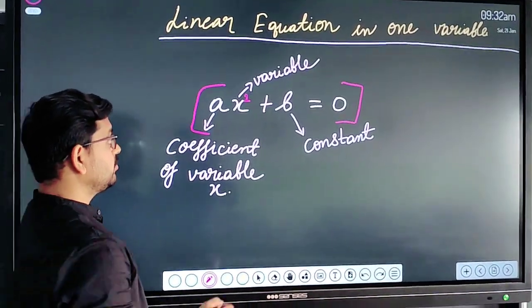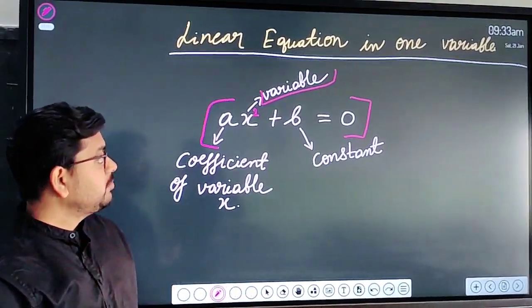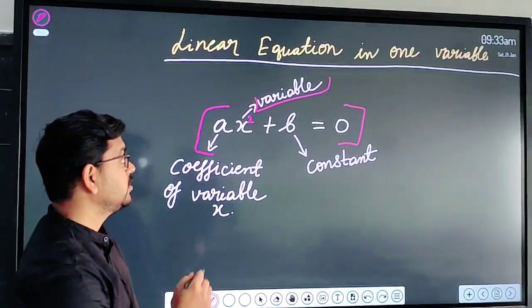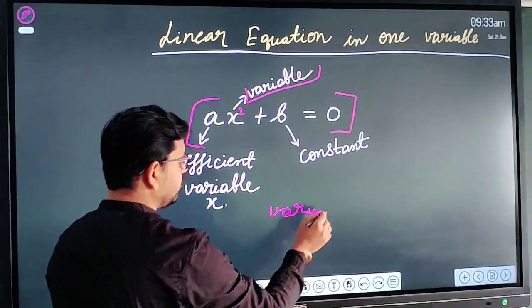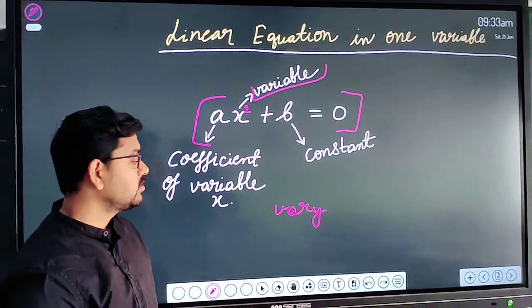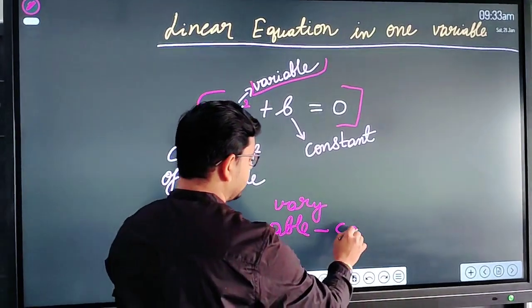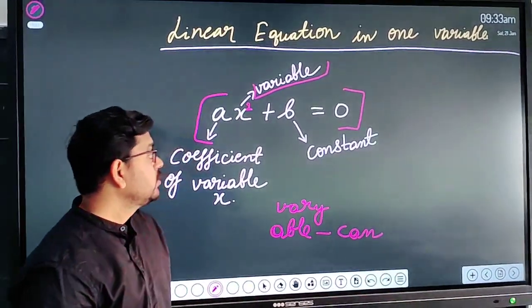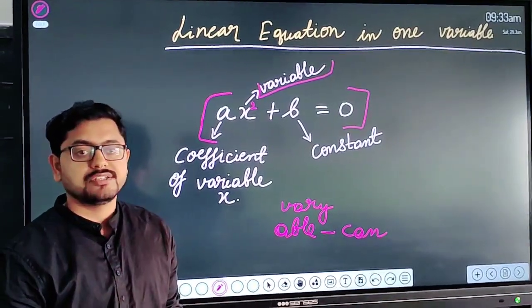Now what is the variable here? Variable's meaning is hidden here. As we see, vary means change. So vary means something that can change its values, and a term that can change its values is known as variable.